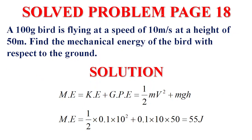Solve problem page 18. A hundred gram bird. Gram is for mass. The SI unit of mass is kilogram. To convert from gram to kilogram, we divide by thousand. A hundred grams is 0.1 kilogram. So the mass is given. Is flying at a speed, this speed we know is V. At a height, we add H.